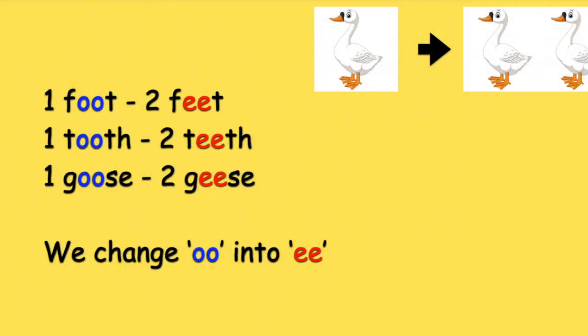One foot, two feet; one tooth, two teeth; one goose, two geese. We change double O into double E.